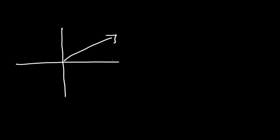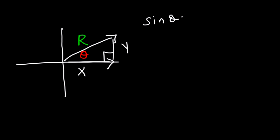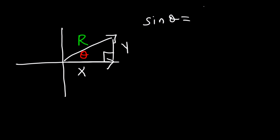Now let's turn this into a right triangle. The hypotenuse of the right triangle is r, and this is x and y. And here we have the angle theta. Sine theta is equal to the opposite side divided by the hypotenuse, so it's y divided by r. Now keep in mind, when dealing with a unit circle, r is 1, so therefore the equation becomes sine theta is equal to y.